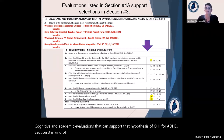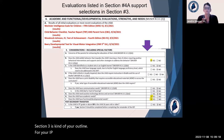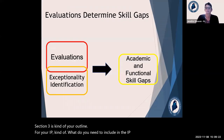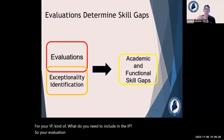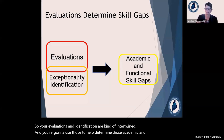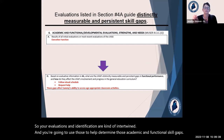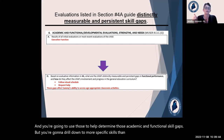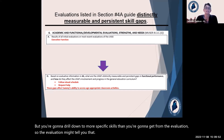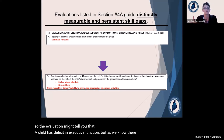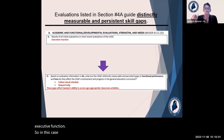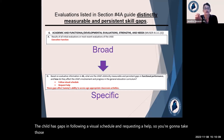Section three is your outline for the IEP — what do you need to include. Your evaluations and identification are intertwined, and you use those to determine the academic and functional skill gaps. But you'll drill down to more specific skills than what you get from the evaluation. For example, an evaluation might indicate a child has a deficit in executive function, but there are many skills involved. In this case, the child has gaps in following a visual schedule and requesting help — you take those broad evaluation scores and drill down to specific skill gaps.